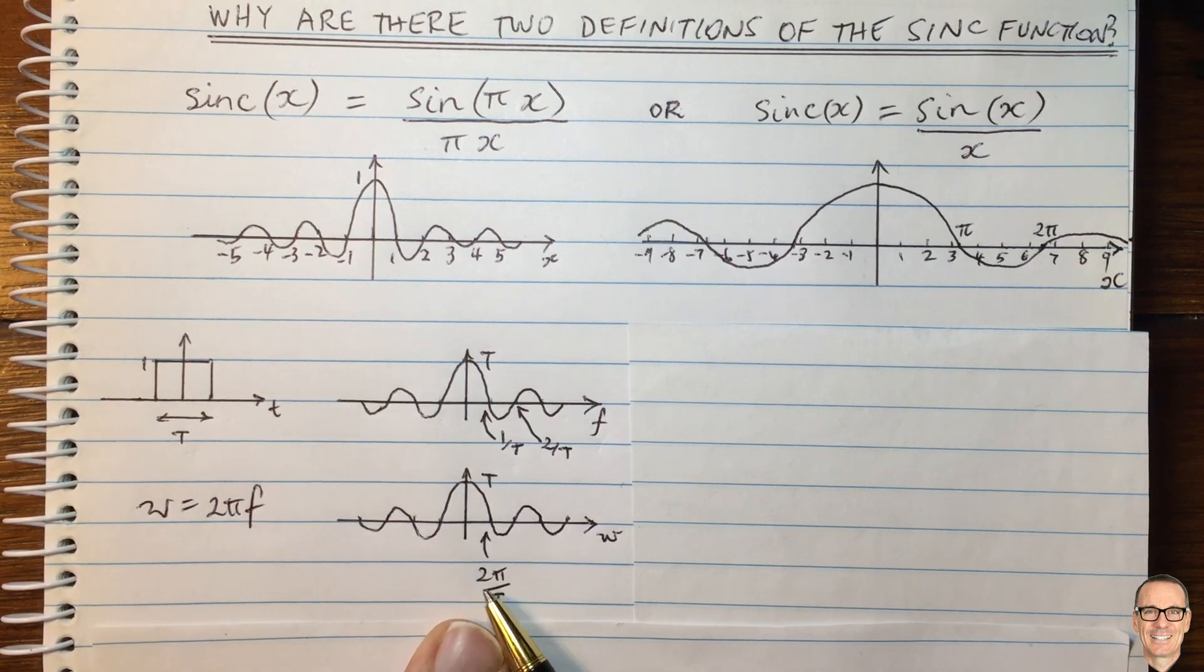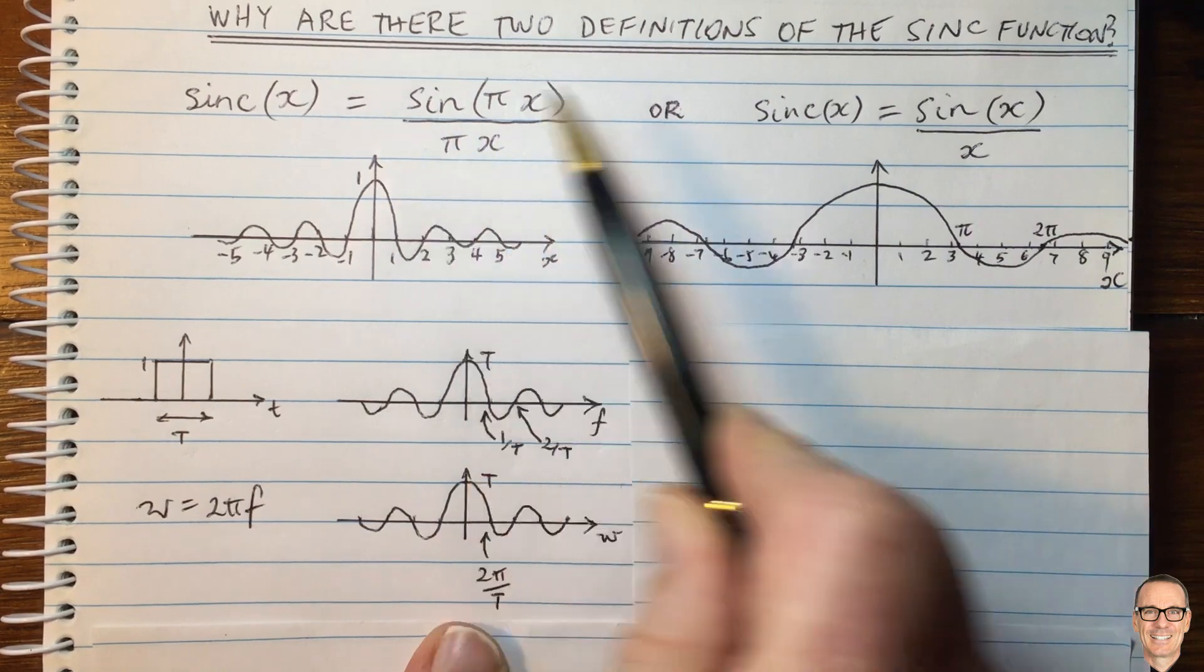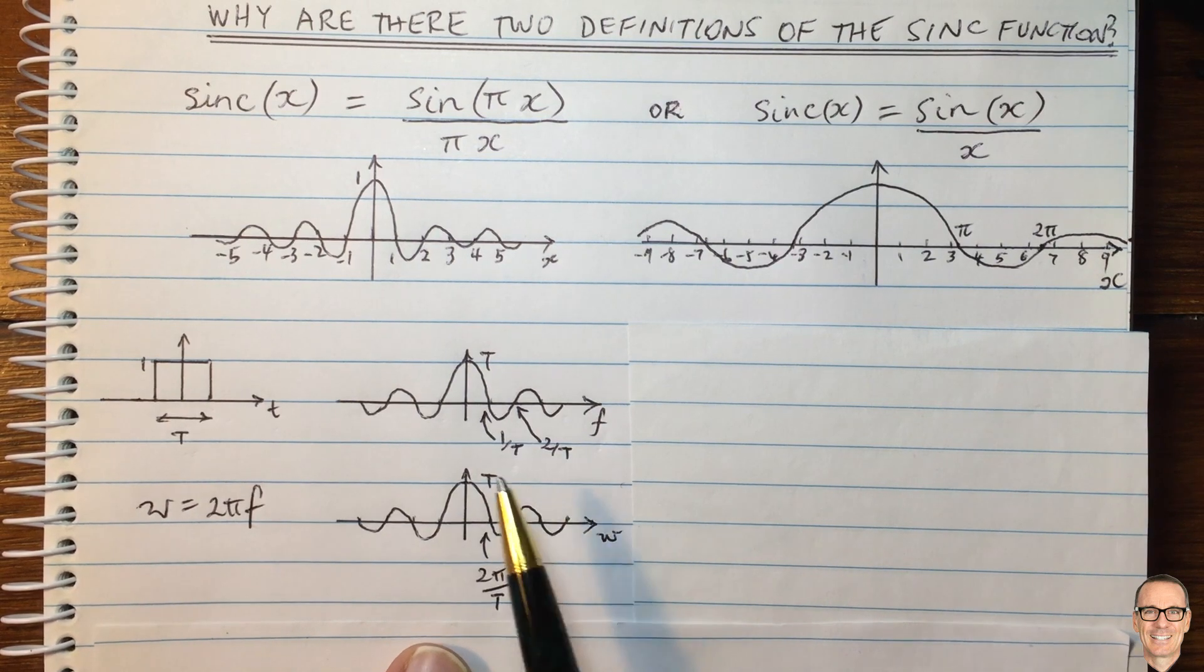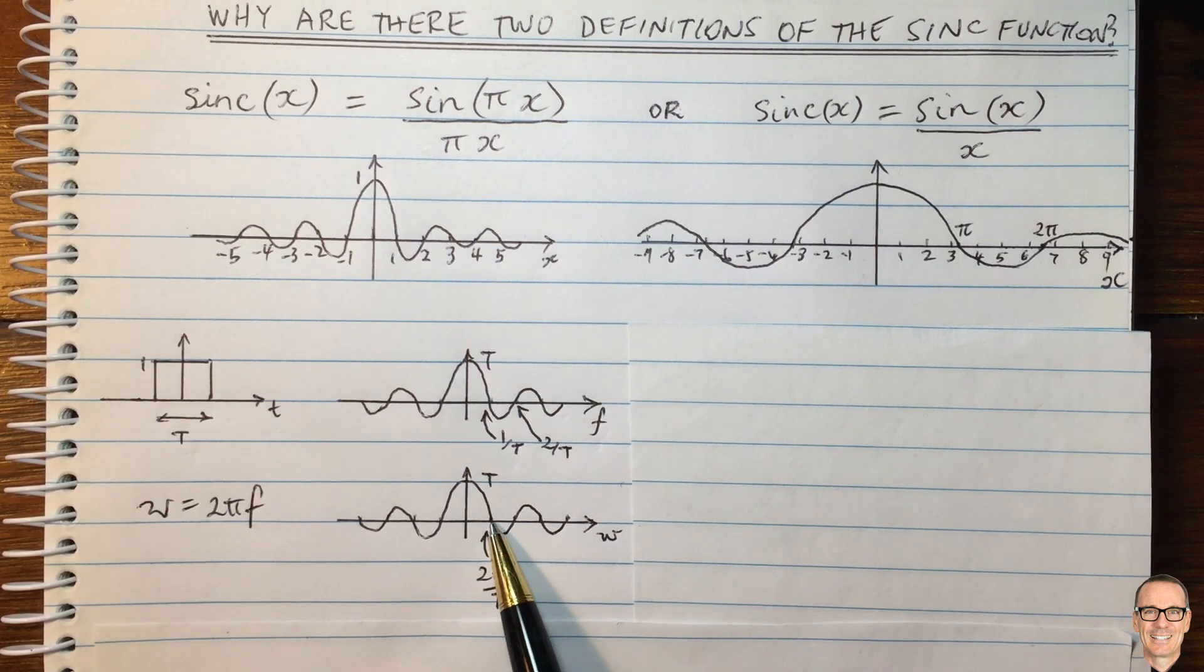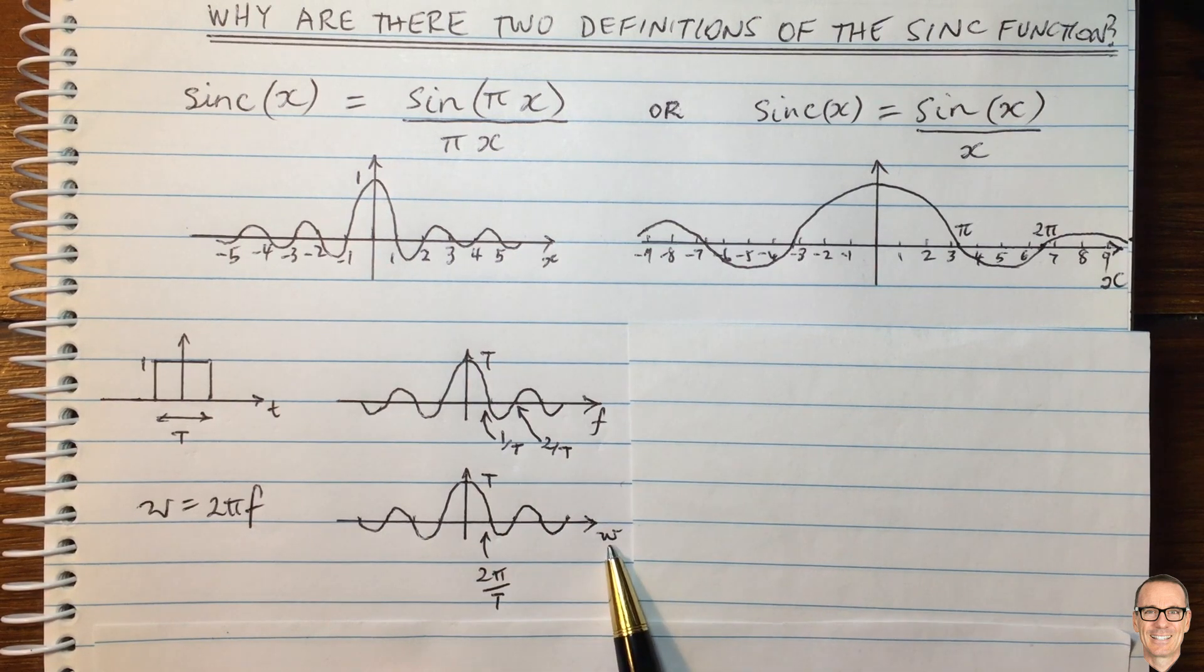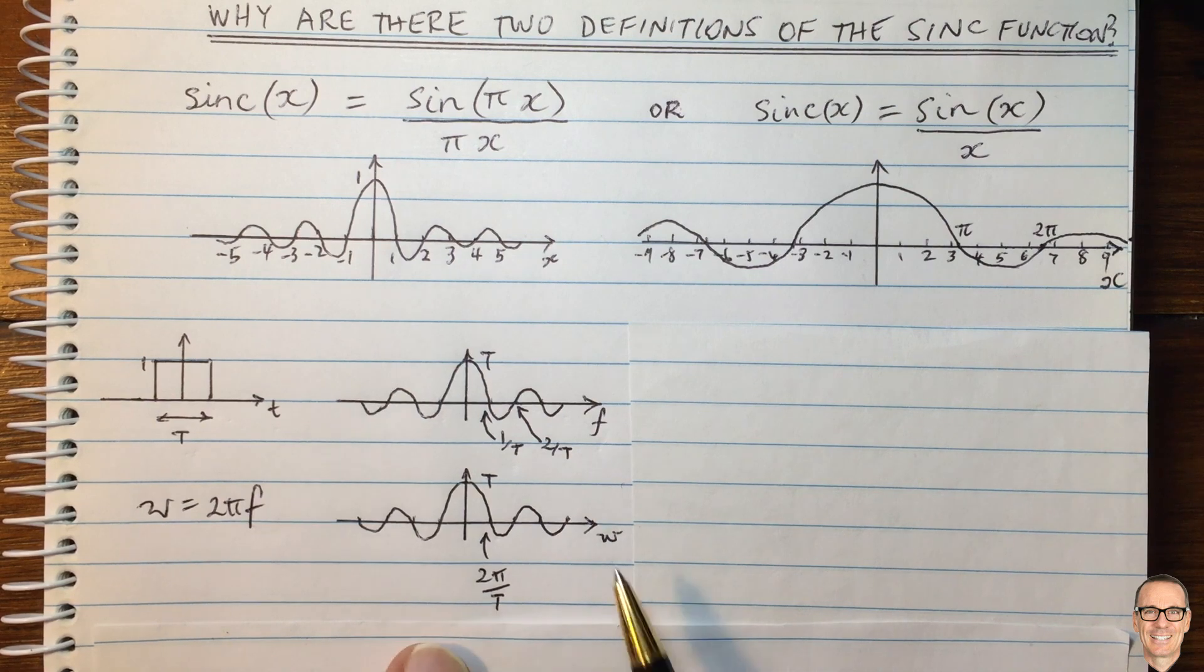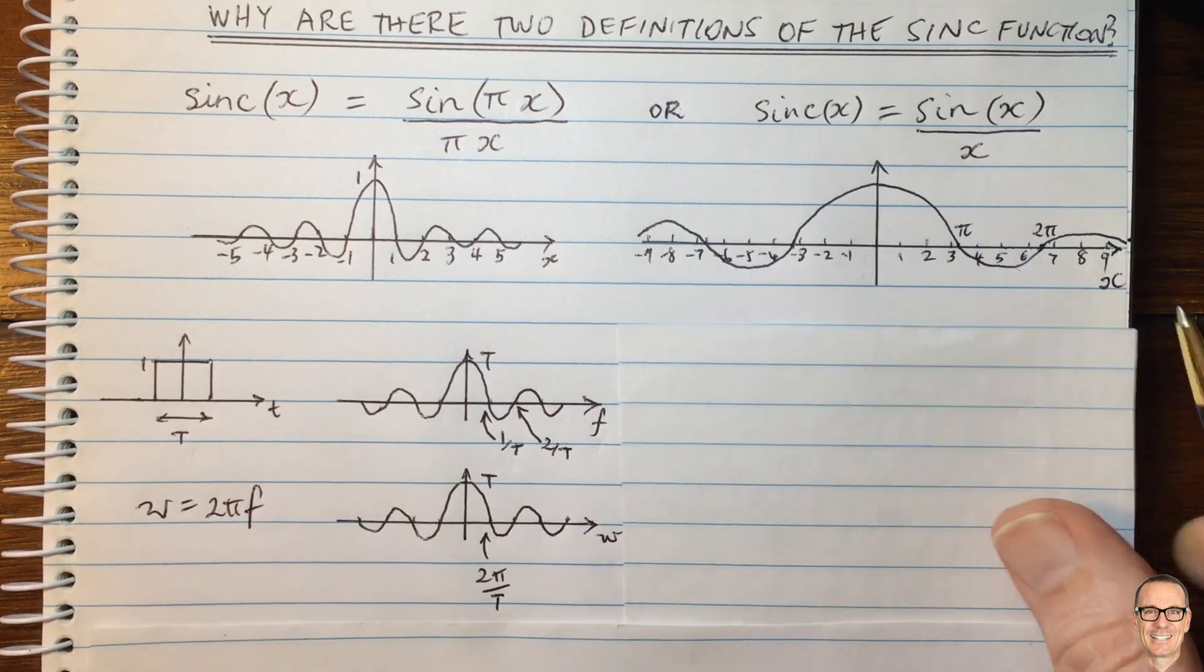And now this might start to give you a clue as to why we're going to be using these two different, or we might prefer, either one of these two different functions up here. So if you plot with respect to omega, then you can simply substitute omega equals 2pi f, and you'll see that the first crossing point, in terms of omega, is 2pi divided by capital T.